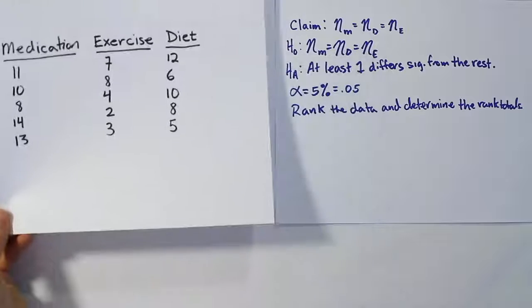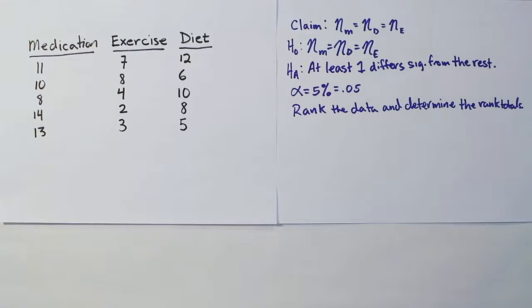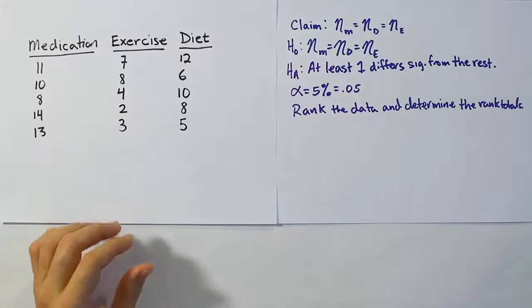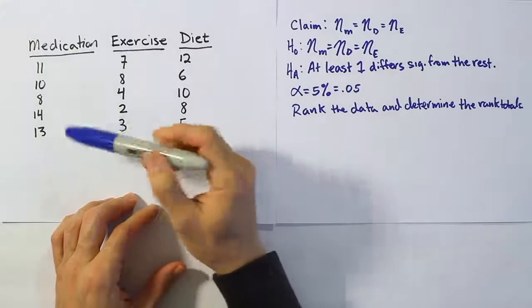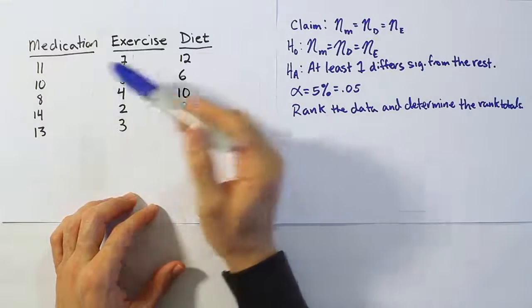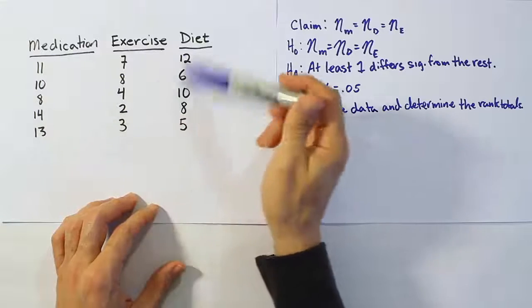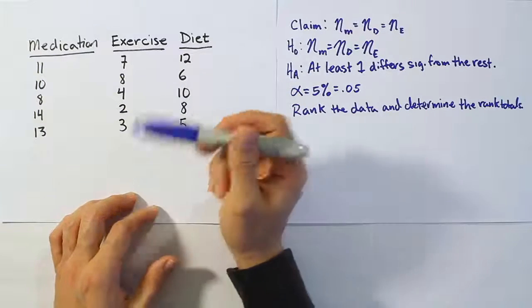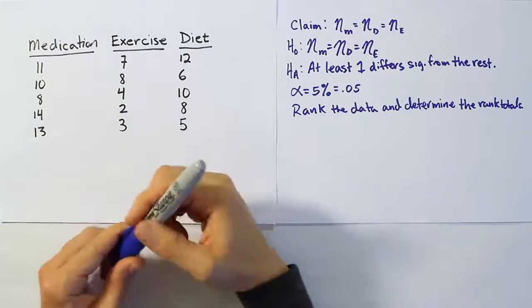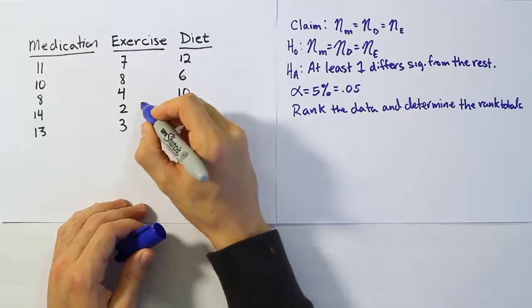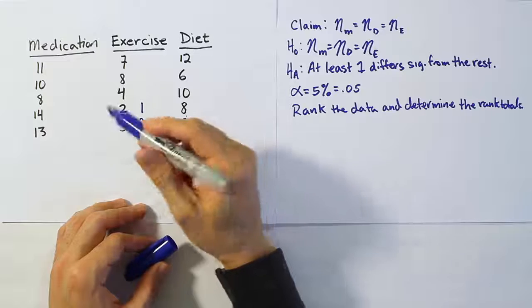Here's our data. I've copied it down again on a separate sheet of paper just so we can do some writing on it. What we're going to do is rank all the data as if it was one giant set of values, not in separate categories. Afterwards, we'll separate the ranks into their respective treatment columns. Let's first rank the data all as if it was one sample set. The smallest number I see off the bat is 2. I don't see anything lower than that, so I'm going to give that rank 1.